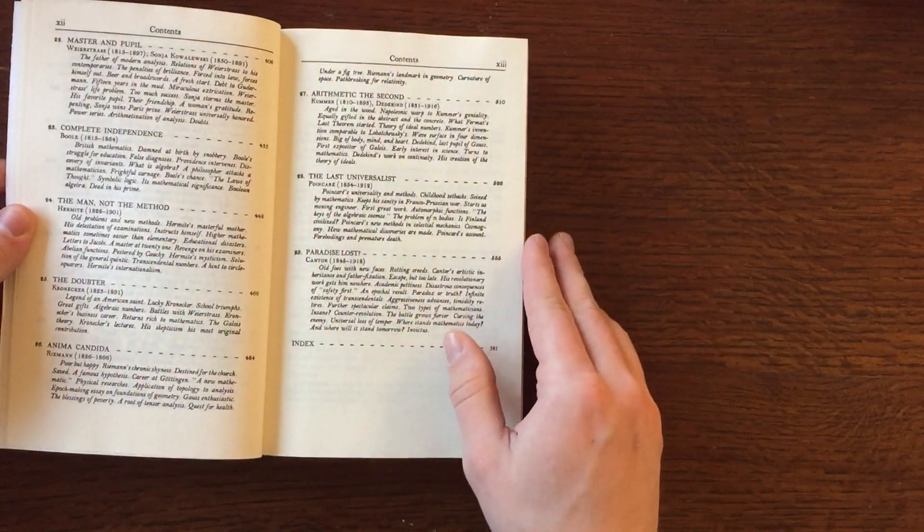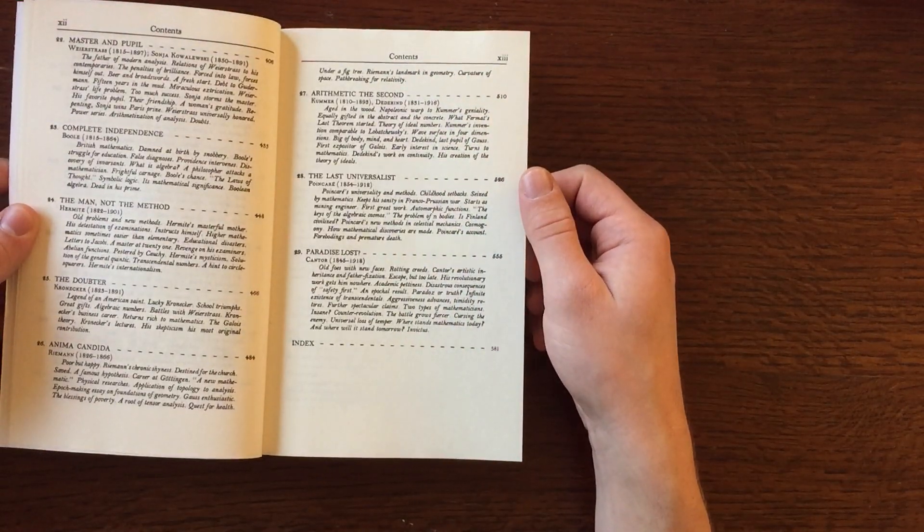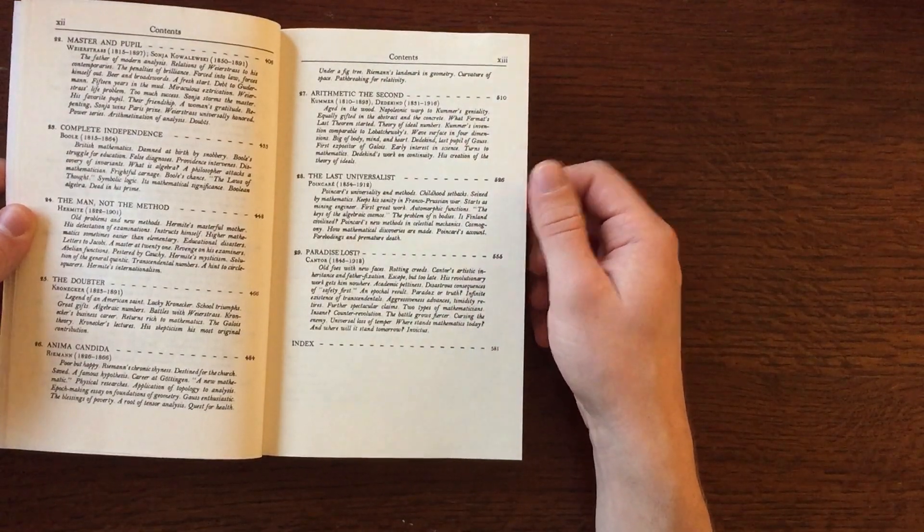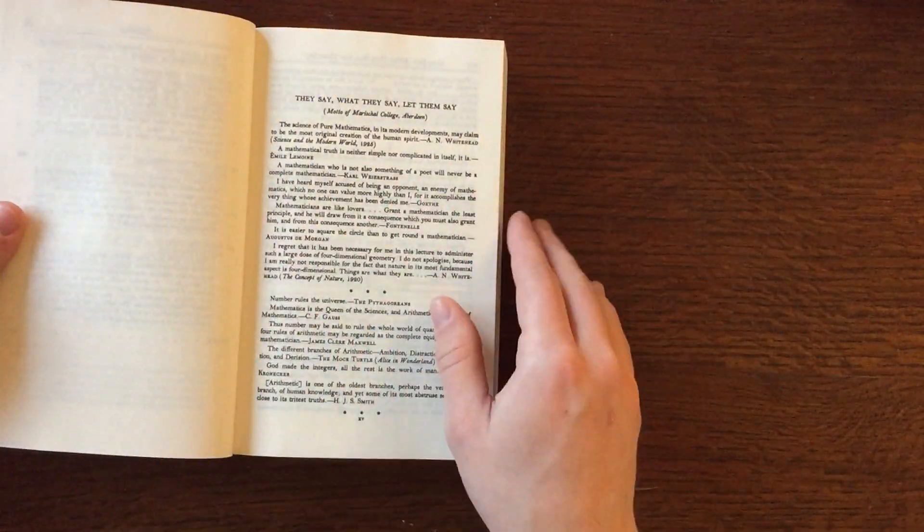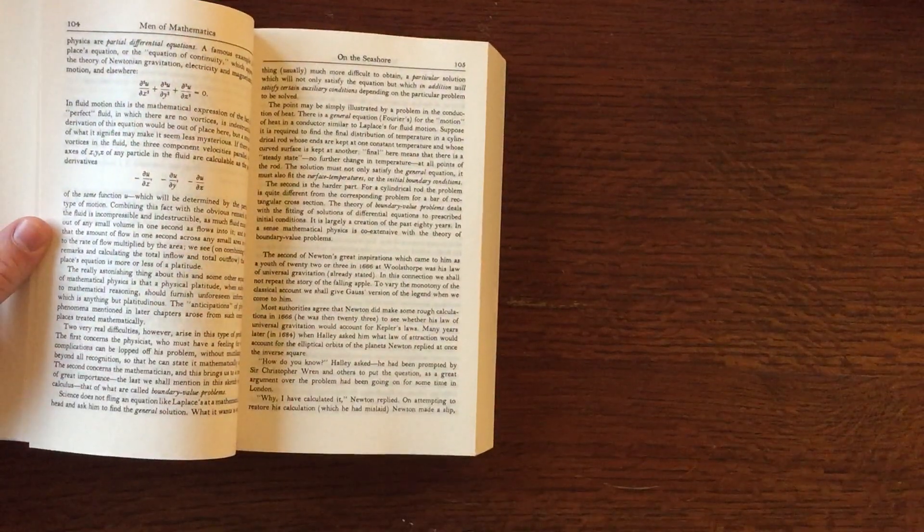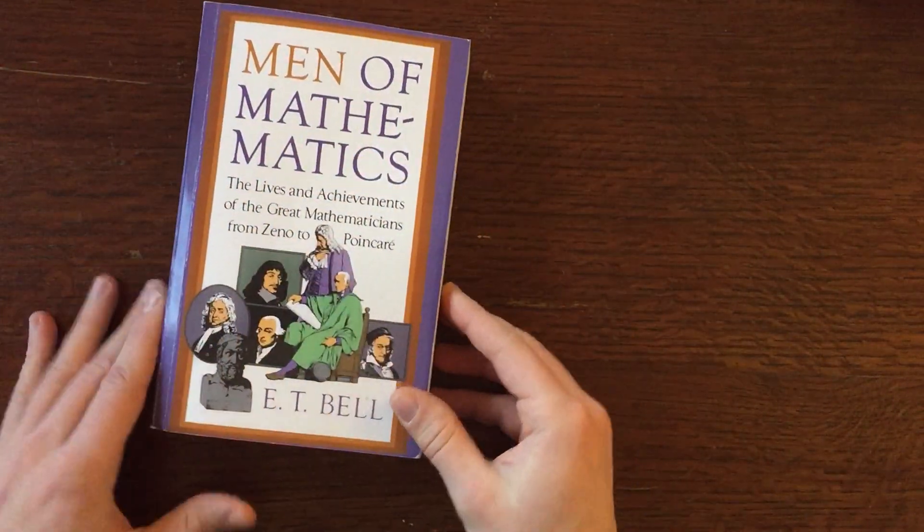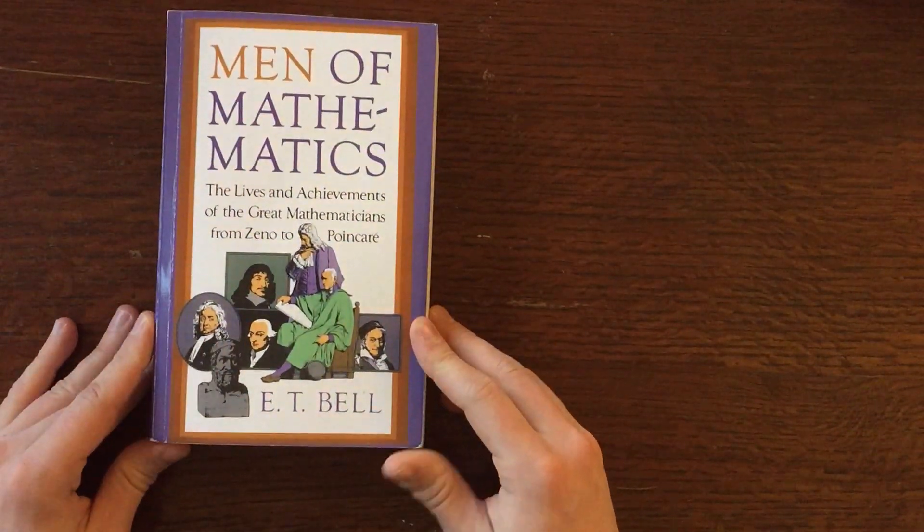Every famous mathematician you could have thought of is probably in here - Riemann, Poincaré, Weierstrass. It tells more or less the brief history of their life, all the famous things they did, and their mathematical accomplishments.